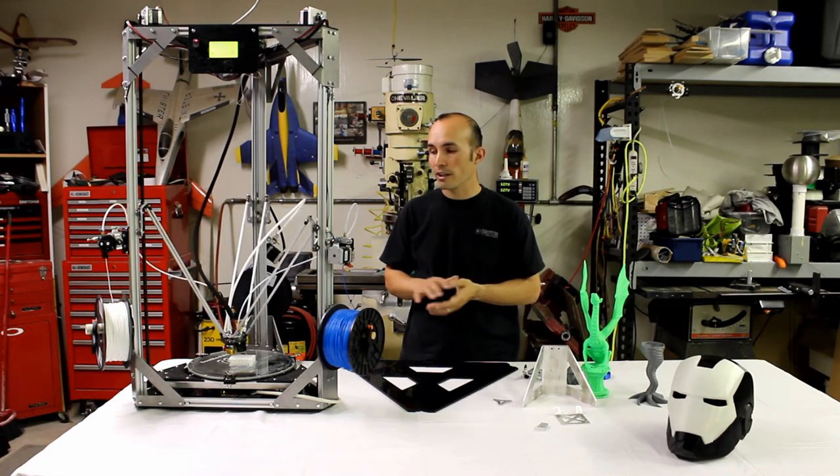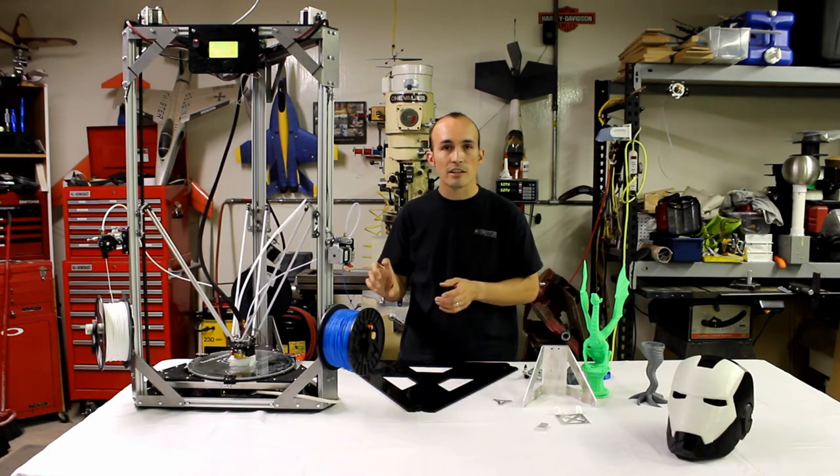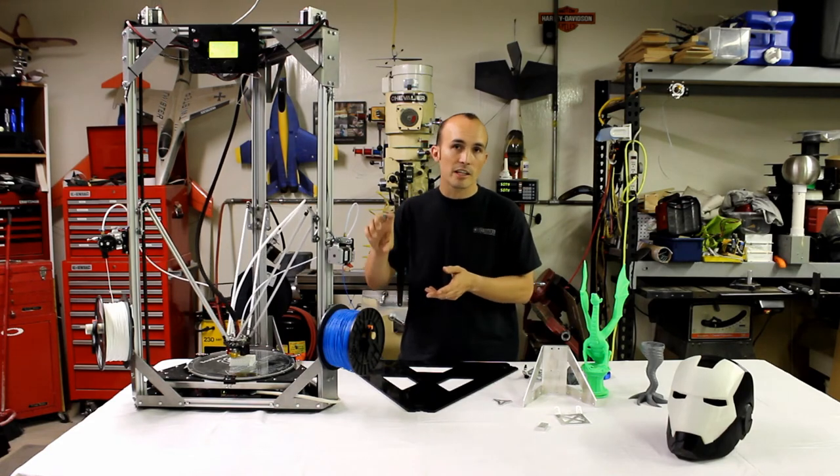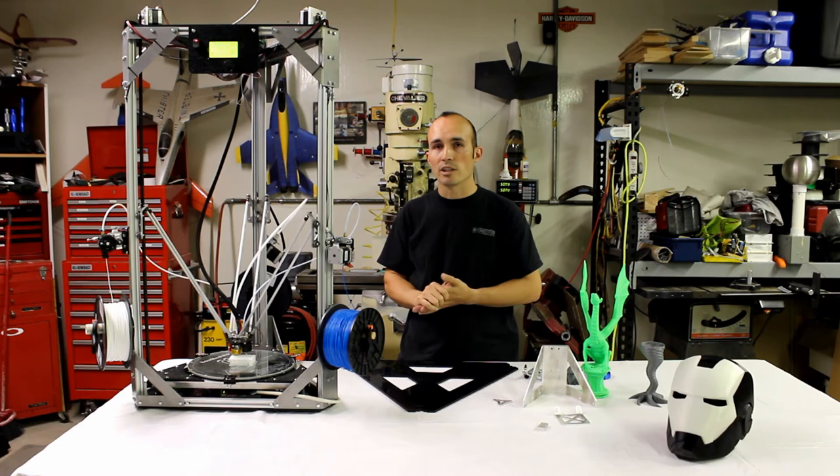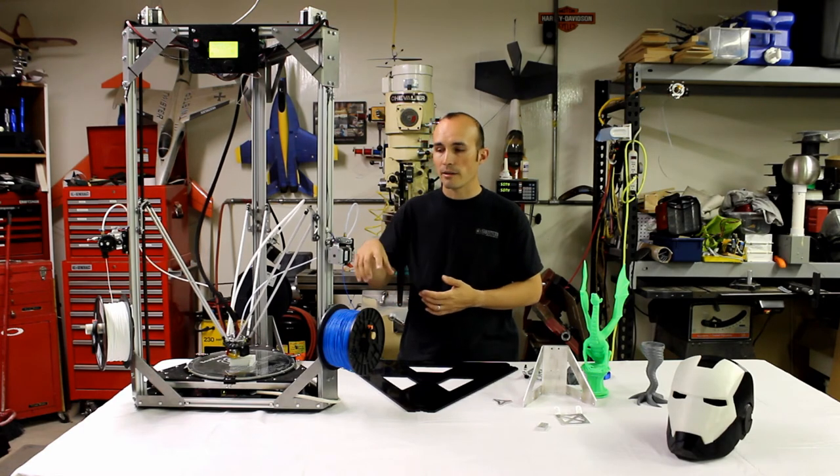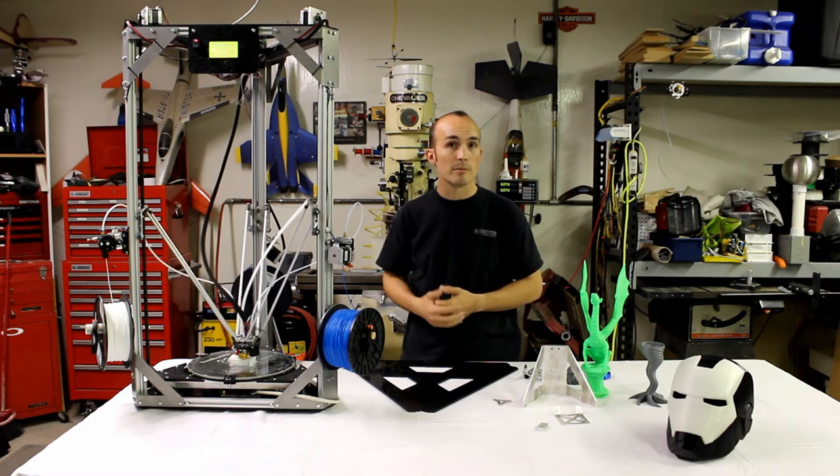That would allow the hot end that's not actually printing to be lifted up so that any plastic that comes out of it when it's not printing will not be embedded in the part that is being printed.